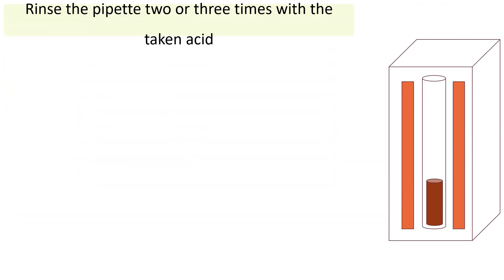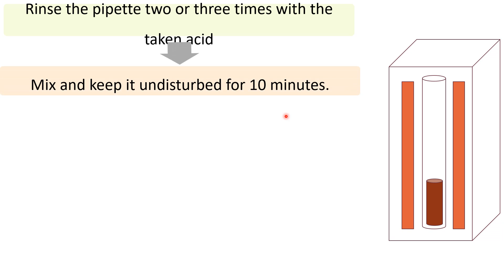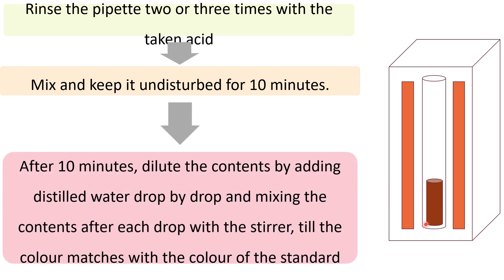Rinse the pipette two or three times with the acid to ensure all blood reaches the Sahli-Adam tube. Mix and keep undisturbed for 10 minutes, allowing all hemoglobin to be converted to acid hematin by N/10 HCl. After 10 minutes, dilute the contents by adding distilled water drop by drop — not tap water, as its impurities cause turbidity — until the color matches the standard.